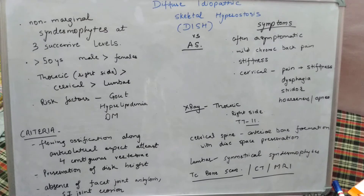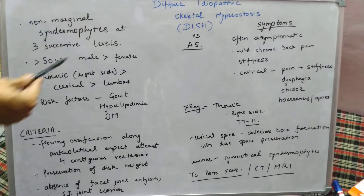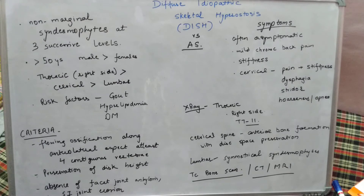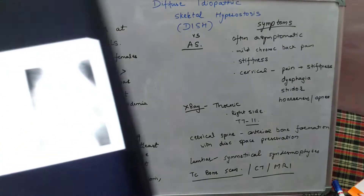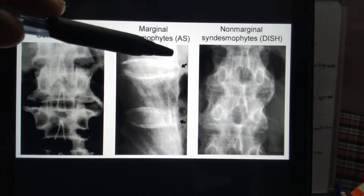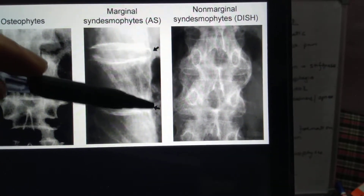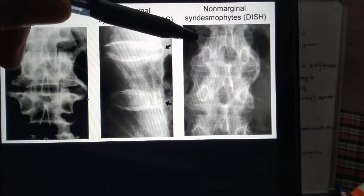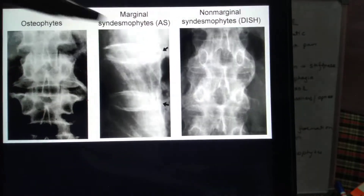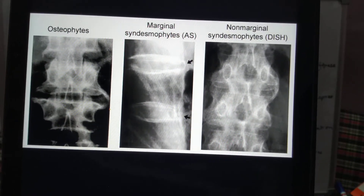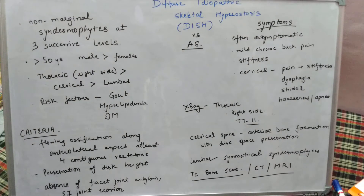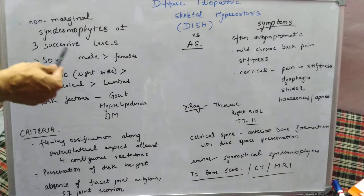The first important feature or definition of DISH is the formation of non-marginal syndesmophytes at at least three successive levels. As we discussed in previous videos, Ankylosing Spondylitis involves marginal osteophytes or syndesmophytes at the margins, whereas in DISH they are non-marginal — they occur not at the margin alone. So the definition is: formation of non-marginal syndesmophytes at at least three successive levels.